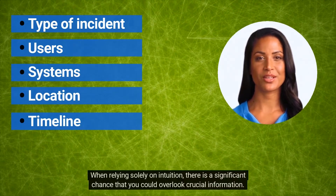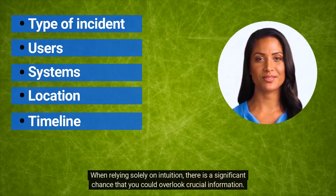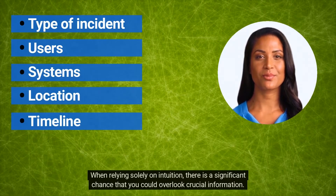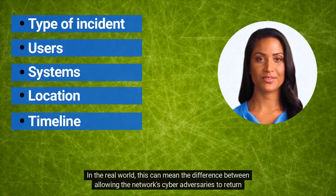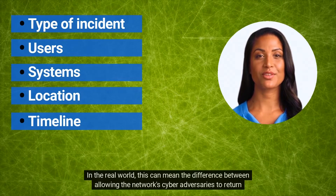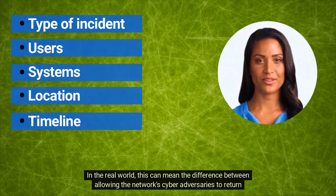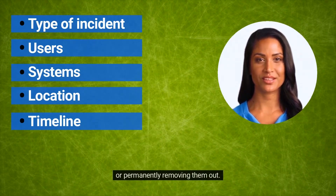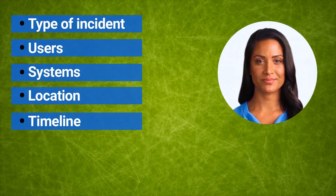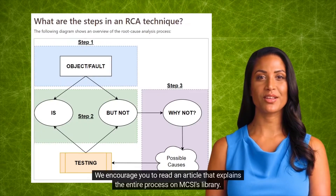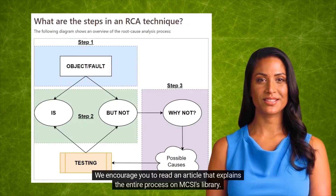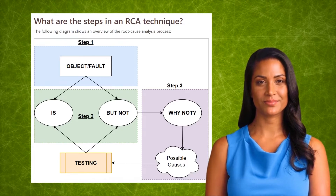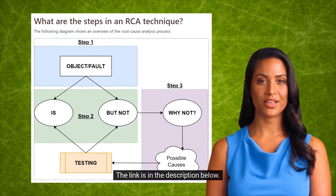Then and only then can you completely understand what needs to be done to contain and recover from the incident. When relying solely on intuition, there is a significant chance that you could overlook crucial information. In the real world, this can mean the difference between allowing the network's cyber adversaries to return or permanently removing them. We encourage you to read an article that explains the entire process on MCSI's library. The link is in the description below.